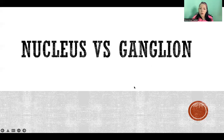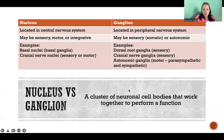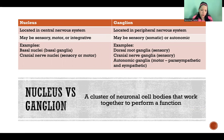Hello, in this video I'm going to discuss the similarities and differences between nuclei and ganglia. Both are clusters of neuronal cell bodies that work together to perform a function, so they're essentially the same thing — clusters of neuronal cell bodies — but they have some key differences.